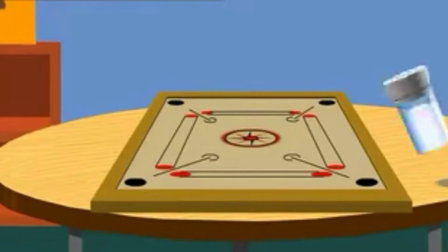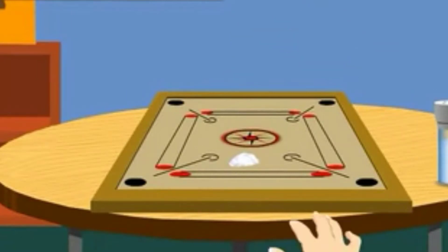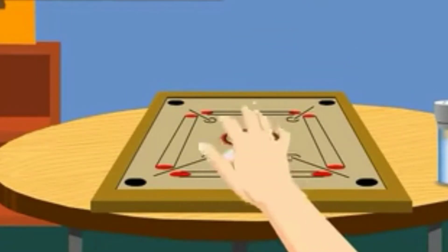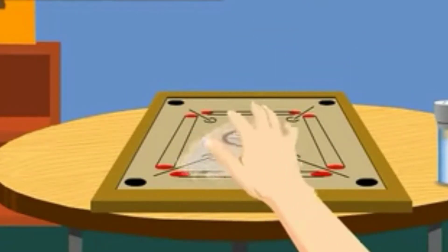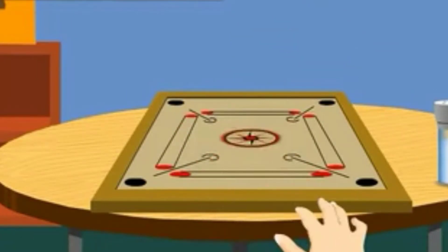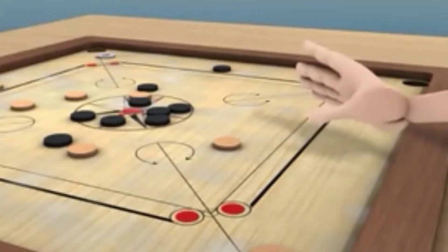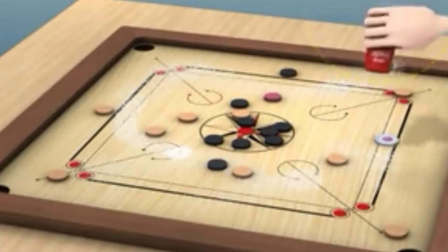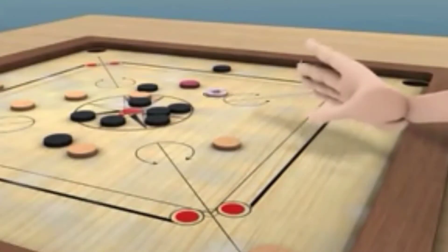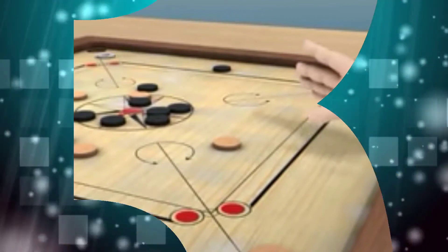When we sprinkle powder on a carom board, the depressions on the surface of the board and the coins of carom get filled with the powder. This makes the surface smoother and reduces friction between the board, the striker and the coins of the carom.